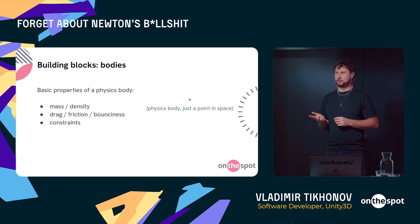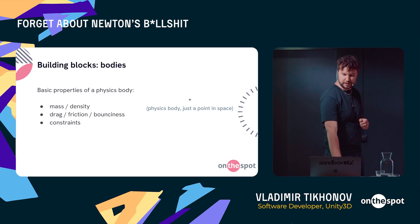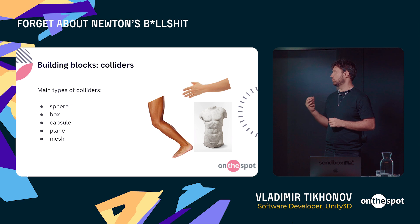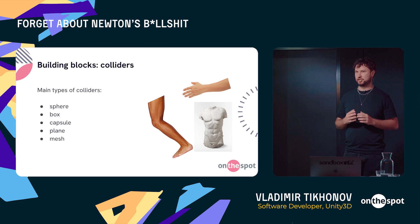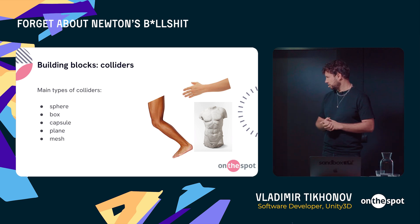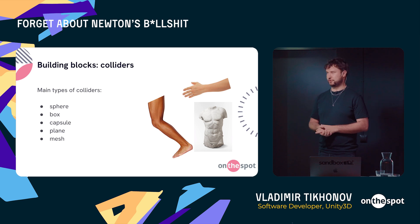A physics body is just like your own body, because your body is not your legs, arms, or head — it's something invisible that connects everything together. A physics body connects colliders. In this analogy, colliders are your arms, legs, and head. Colliders define the shape and volume of a physics body, and colliders actually collide with each other. In the physics world we have basic colliders: spheres, boxes, capsules, and planes. You can also have mesh colliders of any form, but they cost a lot at runtime.